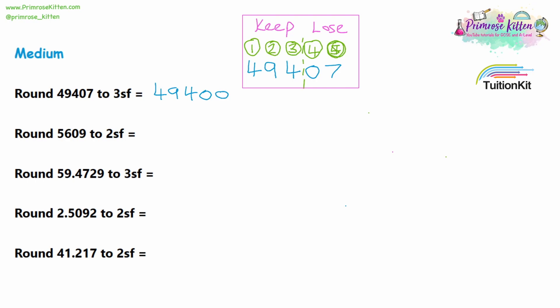When rounding 5,609 to two significant figures, I'm going to rule off after the second digit. We're keeping the five and the six and losing the zero and the nine. The first number we are losing is a zero, so we are not rounding up. We write down the five and the six, then replace the lost digits with zeros, because they were in the units and tens columns — otherwise the five would read as 50 when it should be reading as 5,000. The answer is 5,600.